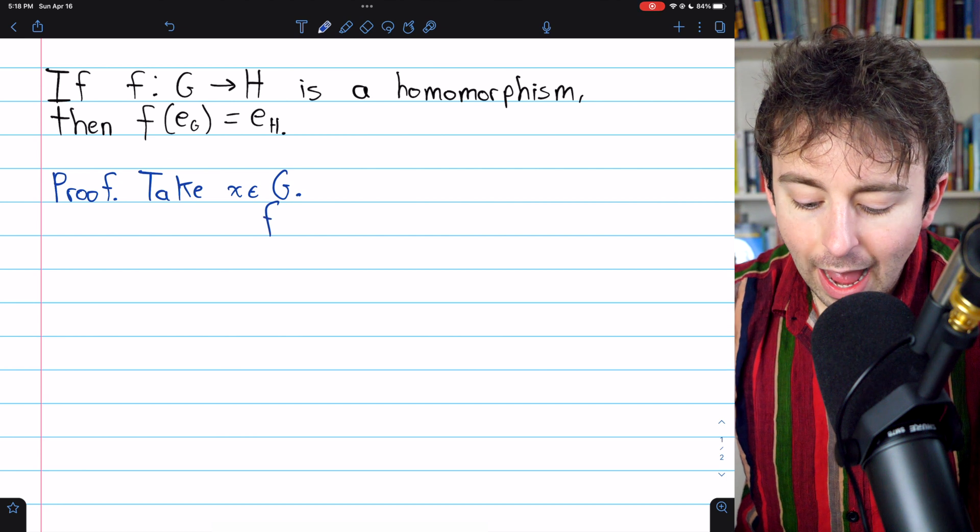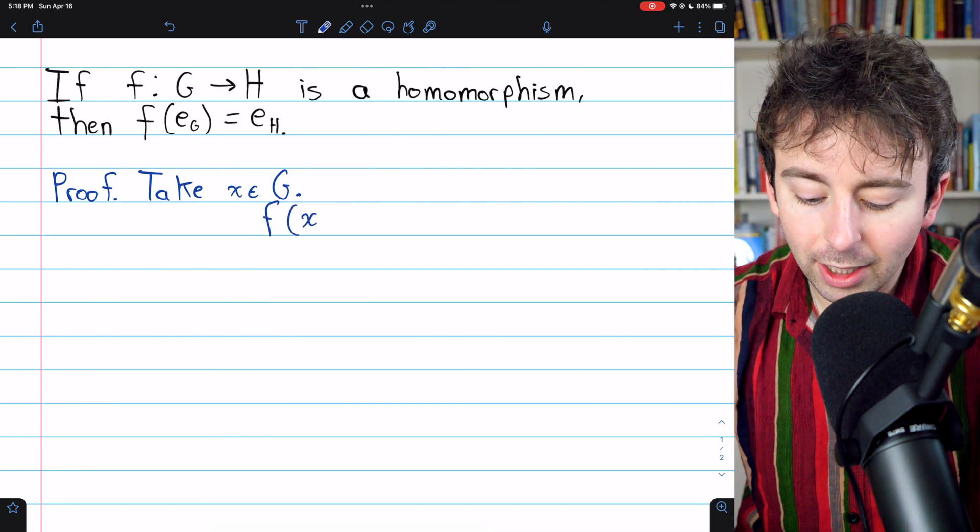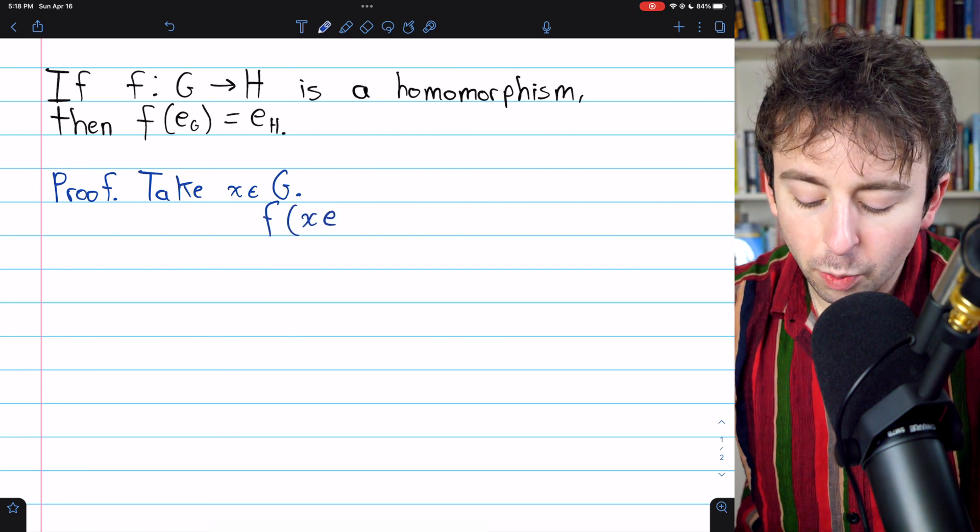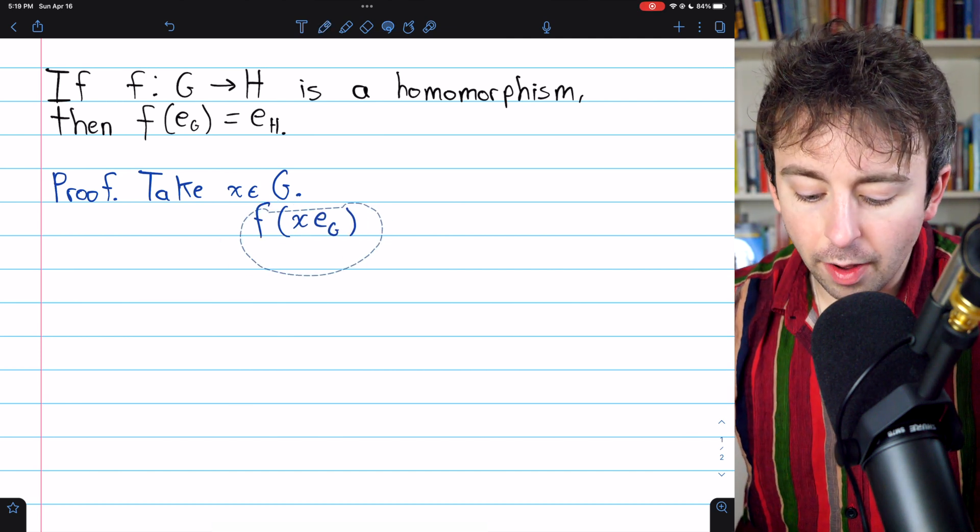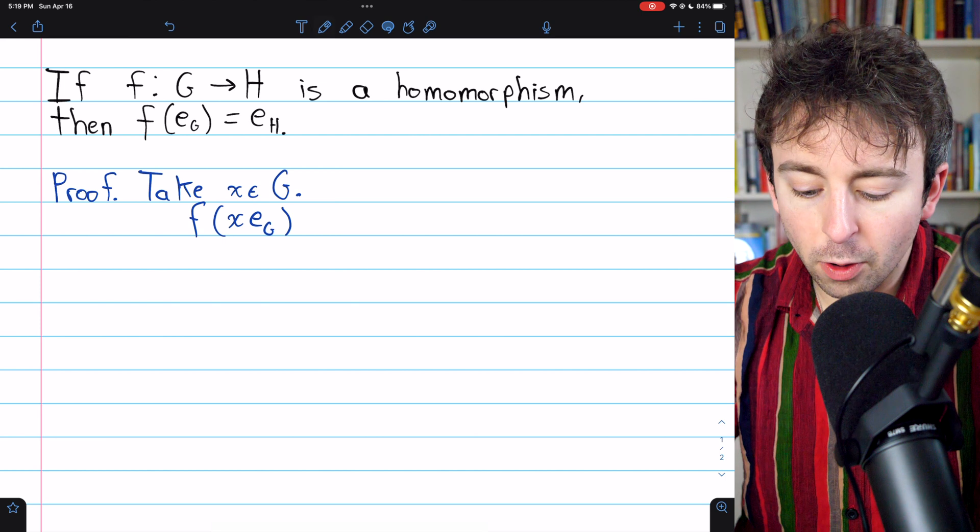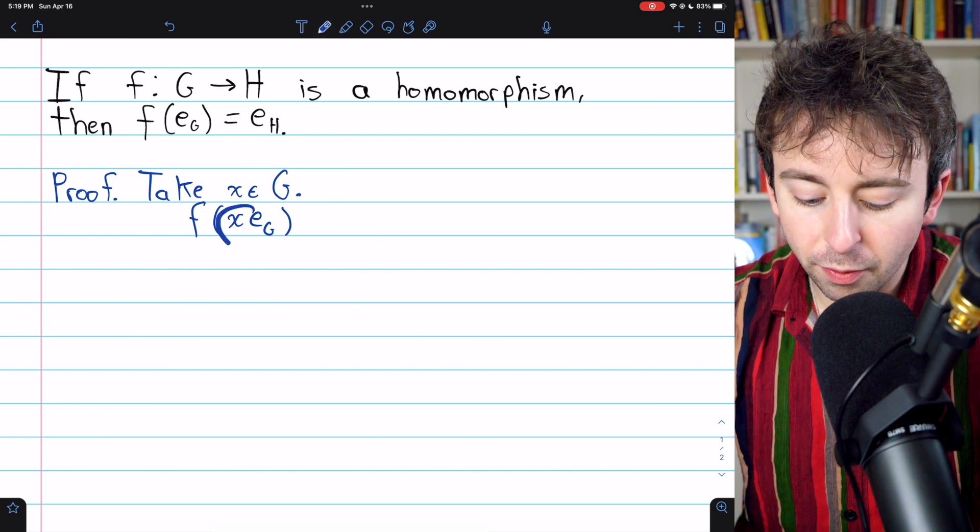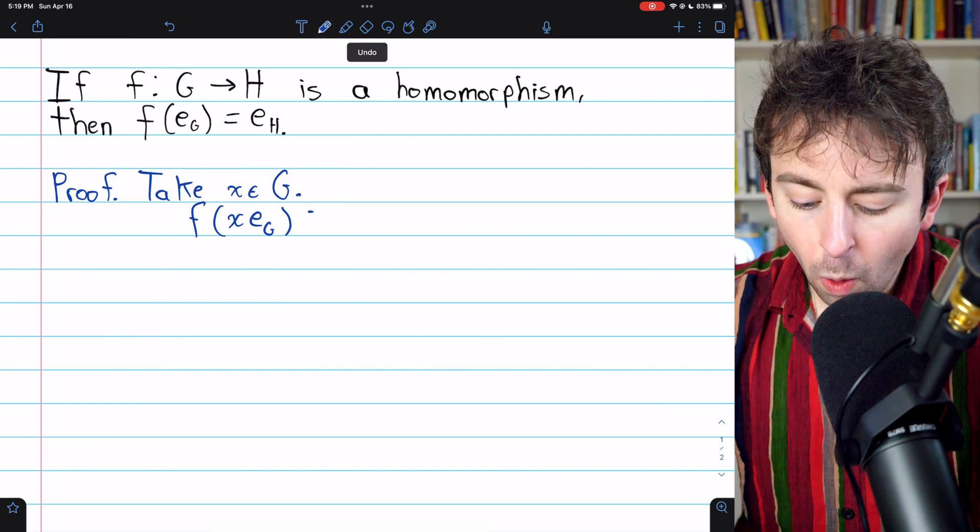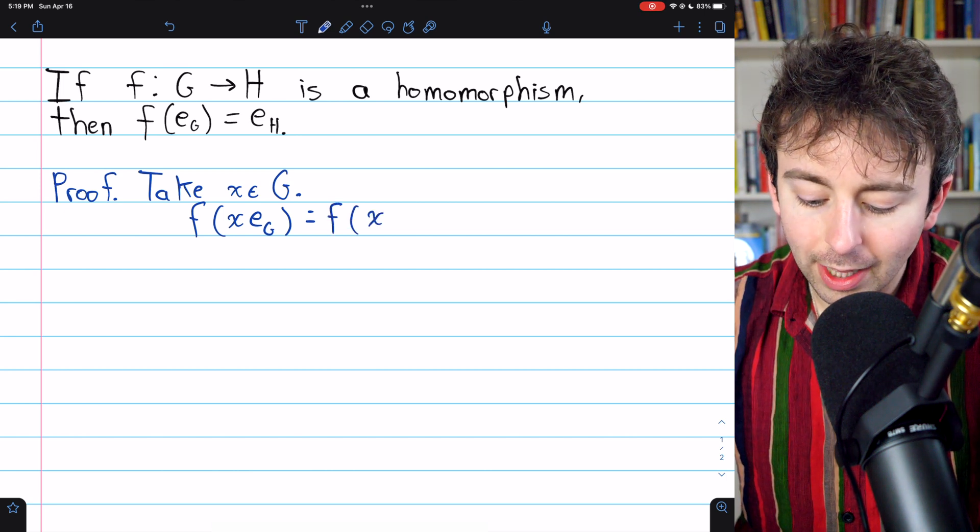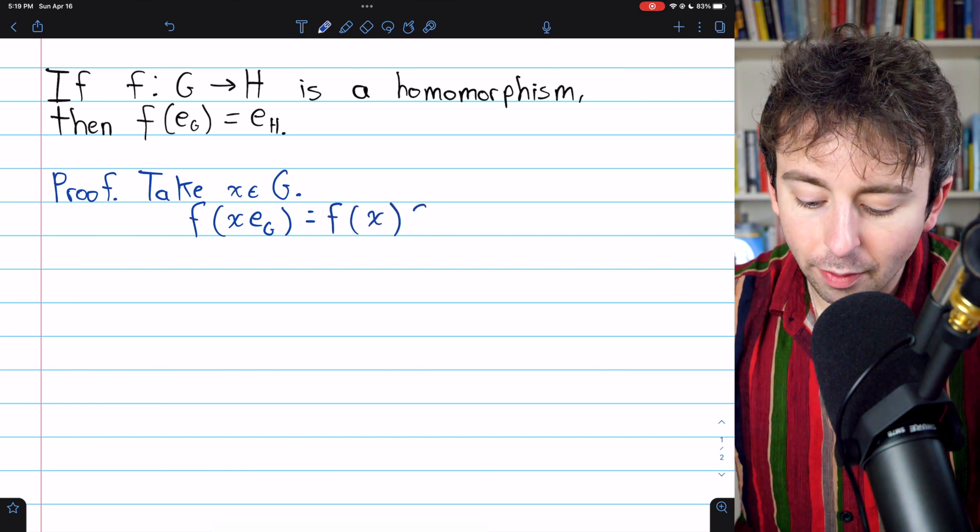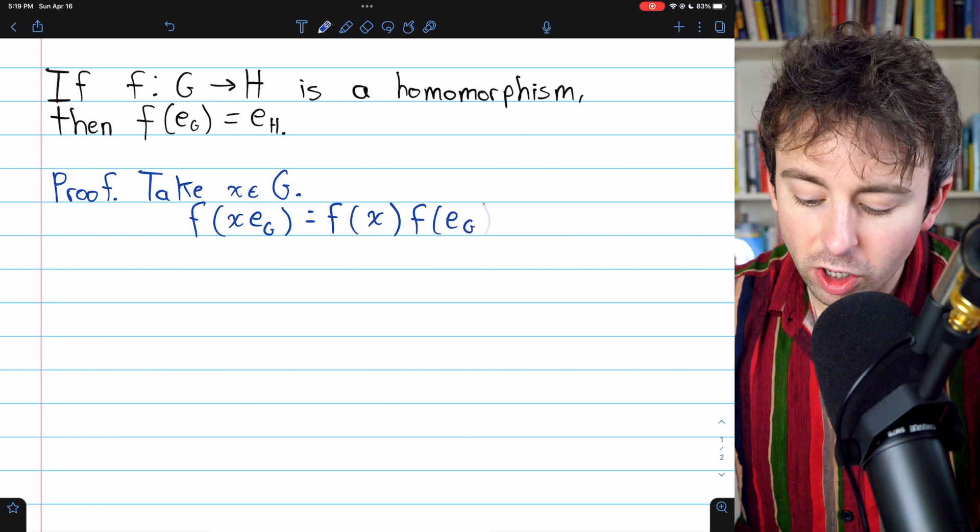Then consider f of this element x composed with the identity element of G. By definition of a homomorphism, it doesn't matter if we combine these elements before we put them in the function or if we combine their images under the function separately. So this is equal to f of x times f of e_G.